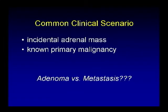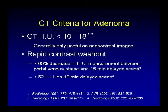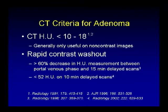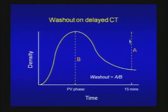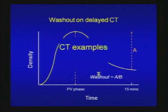Here's a common clinical scenario on oral boards: you detect an incidental adrenal mass but the patient has a known primary malignancy — is it adenoma or metastasis? CT criteria for diagnosing adenoma: Hounsfield unit less than 10 to 18 on non-contrast CT, and they may demonstrate rapid contrast washout, which is greater than 60% decrease in Hounsfield unit between the portal venous phase and a 15-minute delay, or less than 52 Hounsfield units on the 10-minute delay. Non-adenoma retains enhancement at 15 minutes compared to adenoma where there's significant decrease. Washout is calculated by dividing the decrease in Hounsfield units by the Hounsfield unit at portal venous phase.